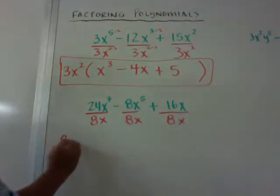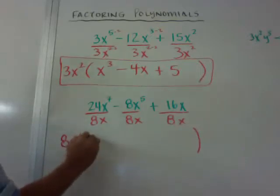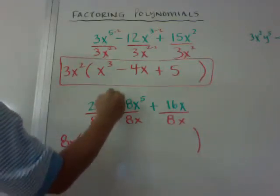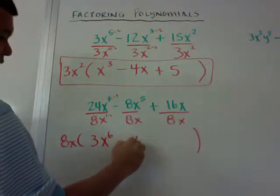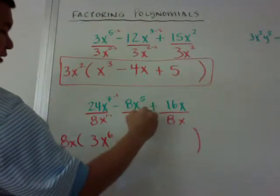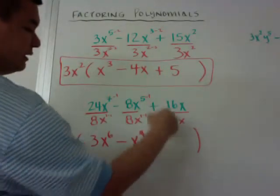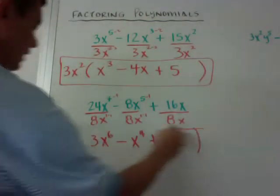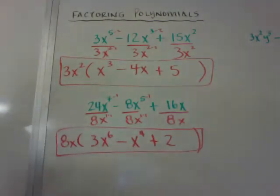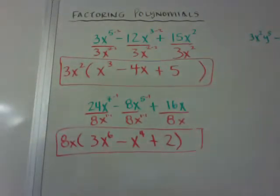So I'm pulling out an 8x. When I put the 8x over here on the side, my GCF, now I just simplify this fraction. 24 divided by 8 is 3. I have an invisible 1. So when I minus 1, I get x⁶ minus 8 divided by 8 is 1. So x⁴ because there's an invisible 1. And then 16 divided by 8 is 2, and x divided by x is just itself. So there's my answer. I factored out an 8x and that would be my answer. That's how you factor a polynomial. You're factoring out a monomial out of each one of these.